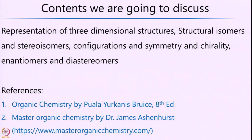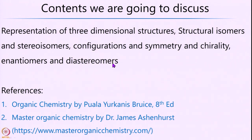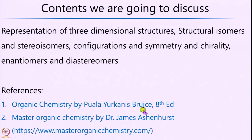Following this, we will go a bit deeper and look at configuration, symmetry, and chirality, and the consequences of these aspects. And then we will further delve into what are called enantiomers and diastereomers. What I am going to cover in this module would mostly be found in Organic Chemistry by Paula Yurkanis Bruice, 8th edition, or an online resource called Master Organic Chemistry maintained by Dr. James Ashenhurst.